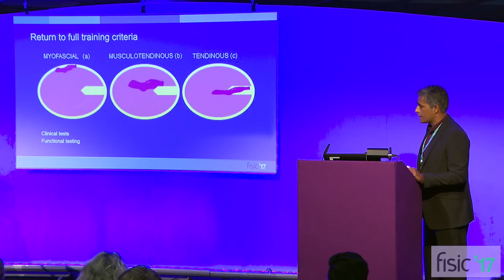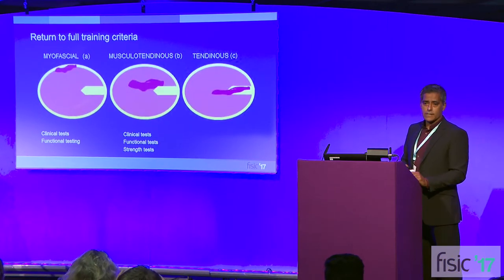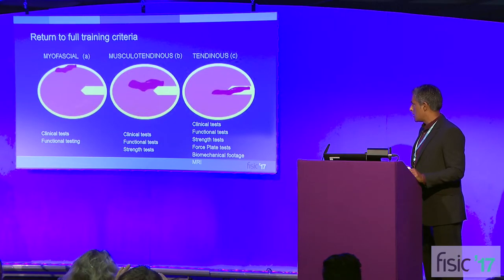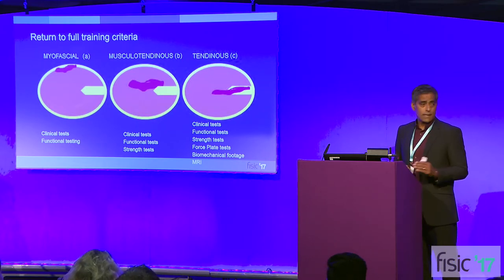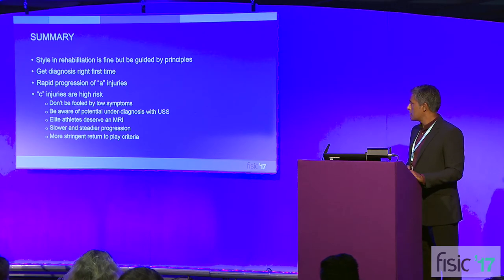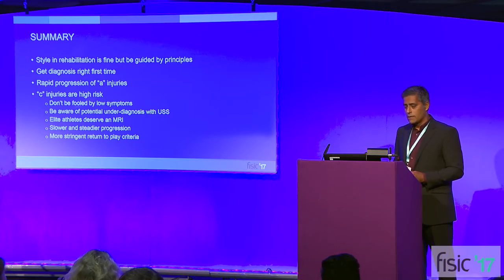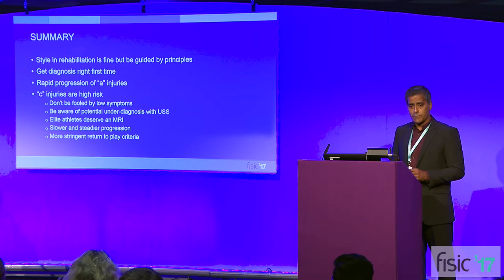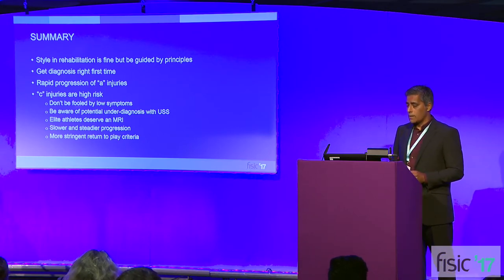Return to full training can be a little looser with lower-grade injuries — use clinical tests and functional tests, and add in strength tests for muscular tendinous injuries. For tendinous injuries you try to do as many tests as you possibly can before getting them back. In summary: style in rehabilitation is fine but you've got to be guided by your principles. Get the diagnosis right the first time, and particularly don't miss your C injuries. You can progress A injuries reasonably quickly, but C injuries are high risk — don't be fooled by low symptoms, be aware of the potential for under-diagnosis with ultrasound, consider MRI where you have any suspicion, use slower steady progression in C's, and apply more stringent return-to-play criteria.